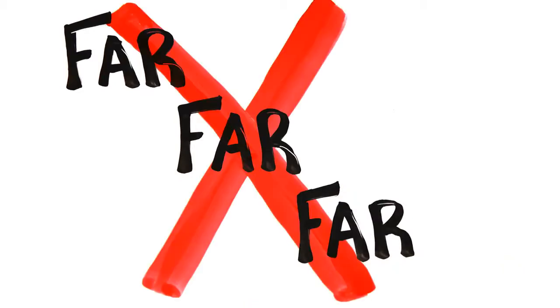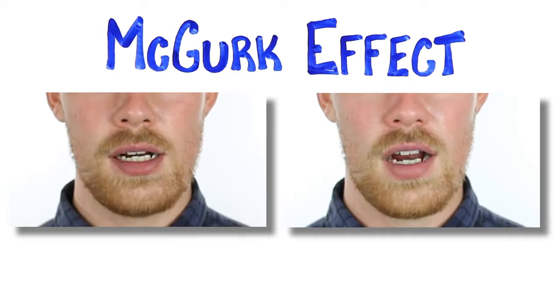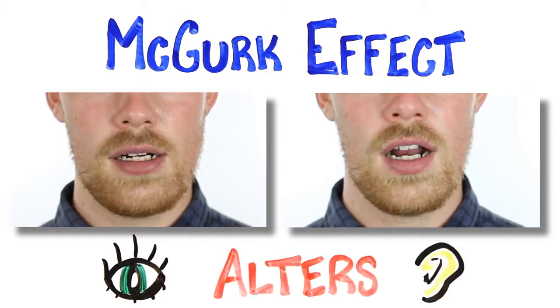In fact, the audio didn't even change between the two videos. Bar, bar, bar. Strange as it may seem, what you hear depends on which video you're looking at. Go ahead, take turns watching each video and see how the sound morphs. Bar, bar, bar, bar. This is a perfect example of something called the McGurk effect, which shows how our visuals can alter what we believe we're hearing.